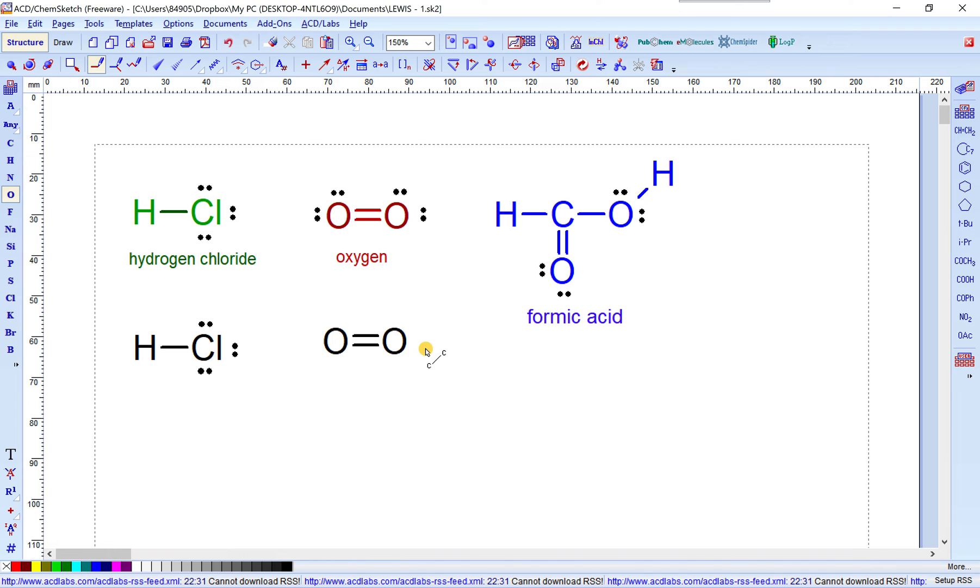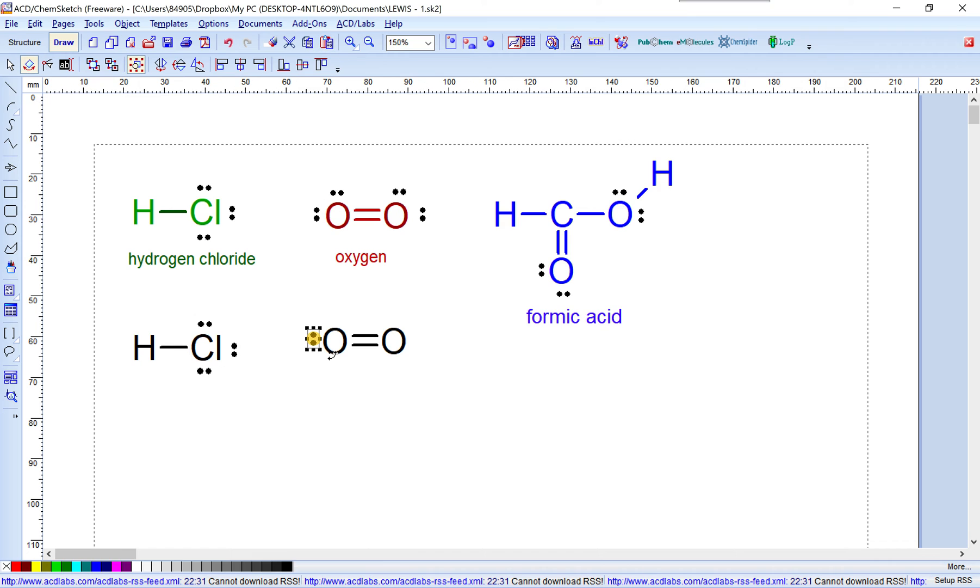And finally copy the valence electron pairs from other Lewis dot structure and paste onto oxygen atom: two, four, six, and eight. Yes, okay.